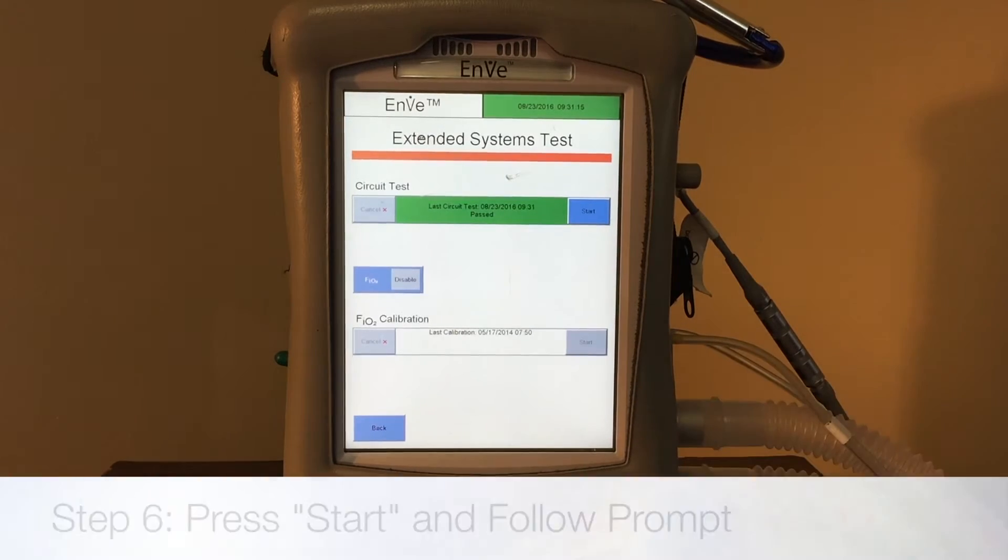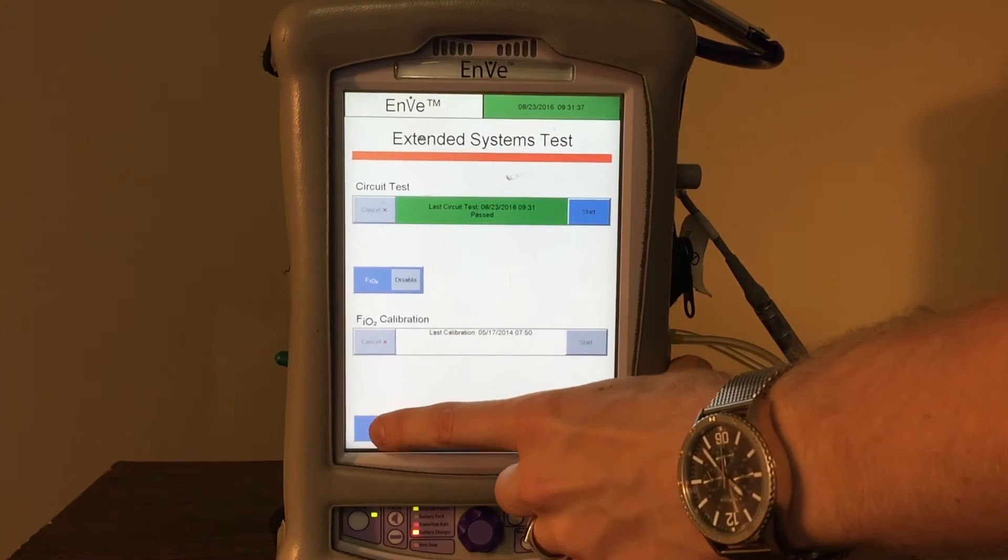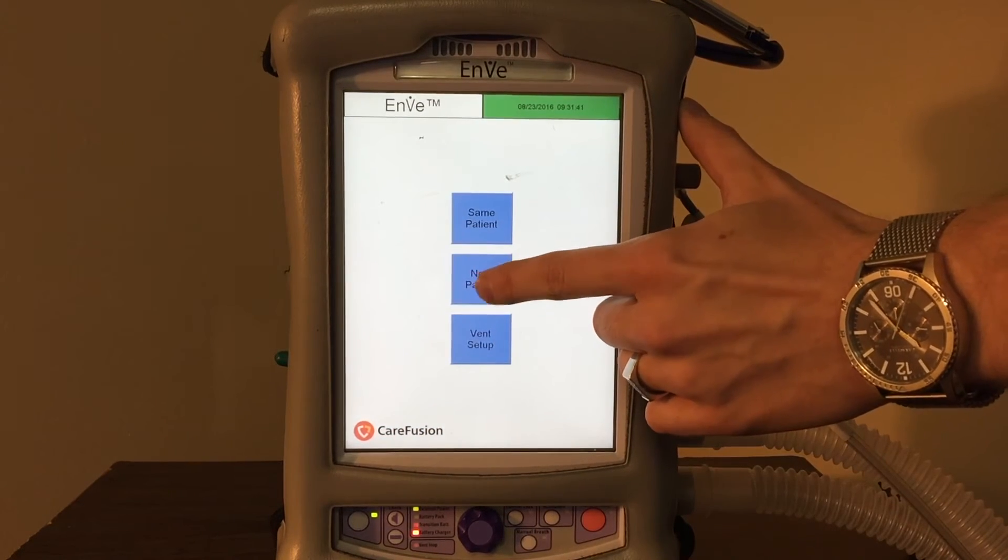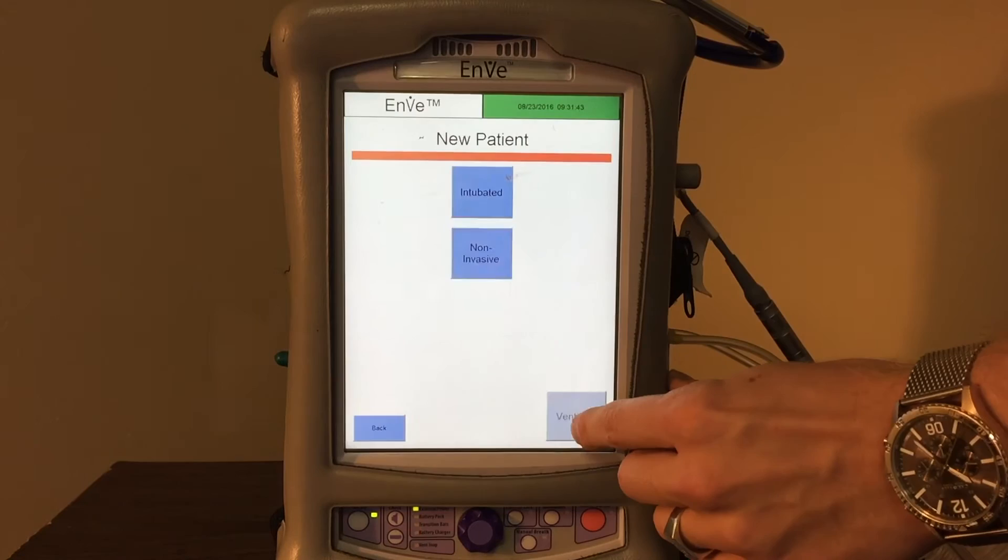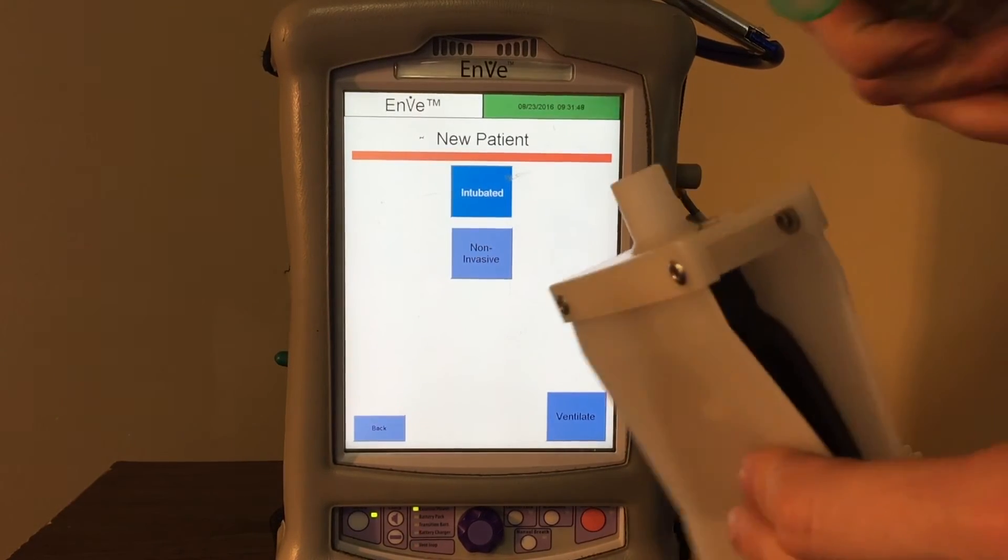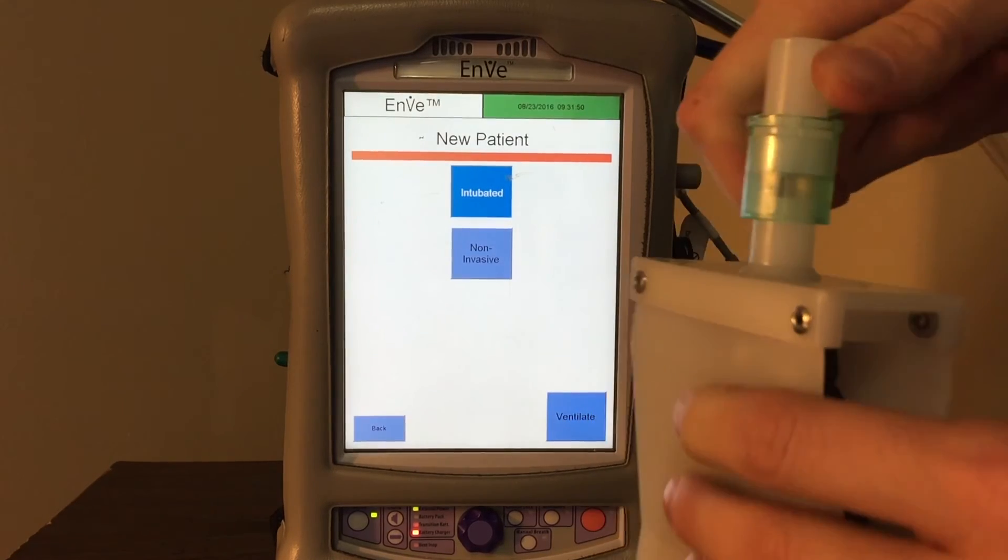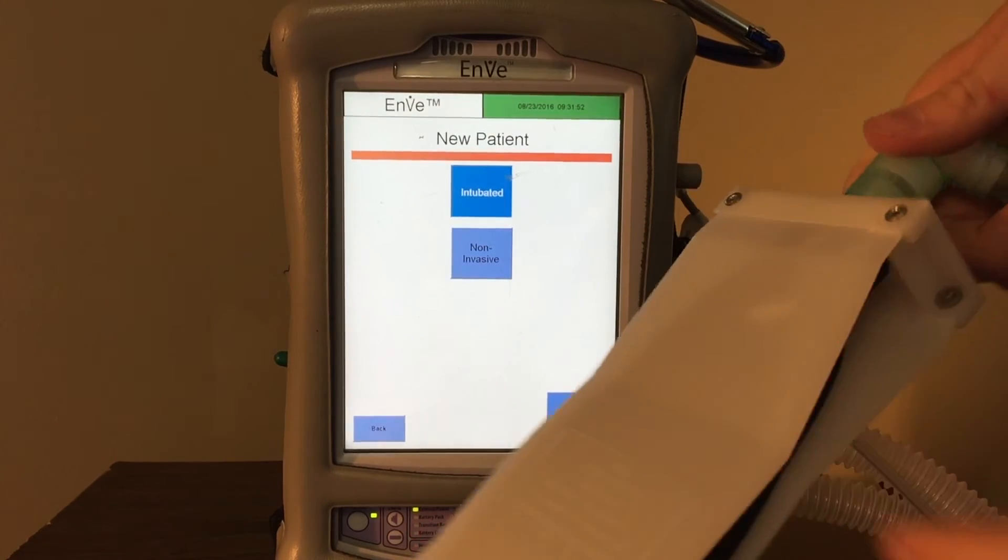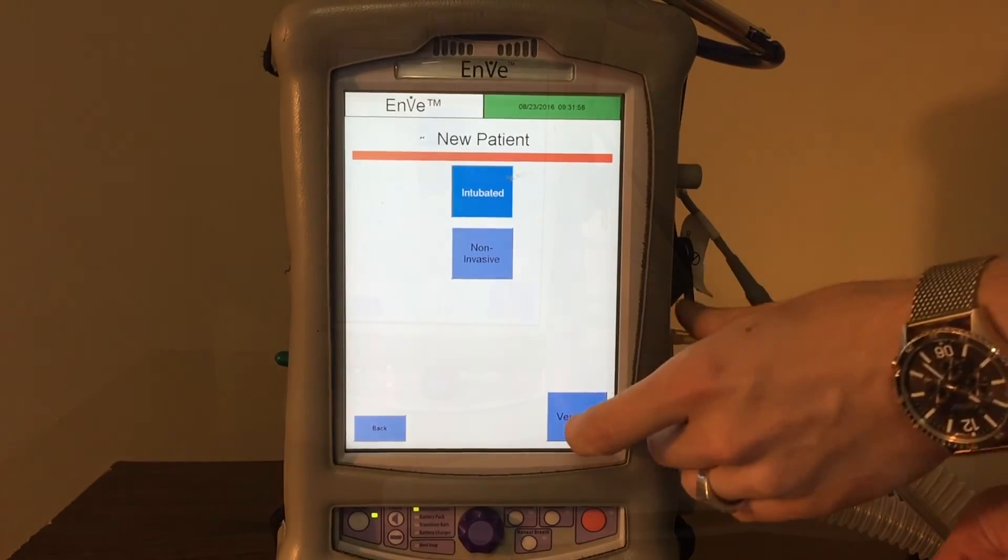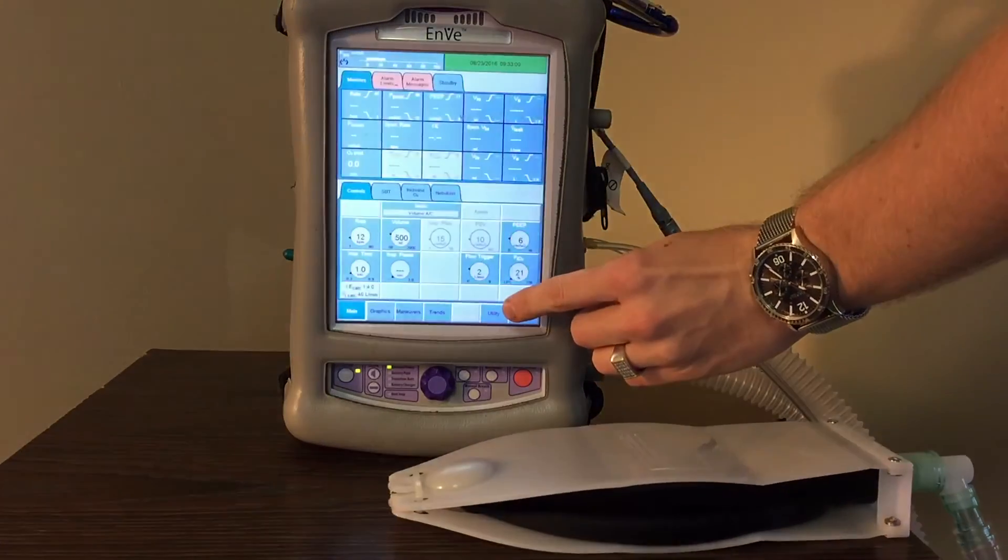So now we're ready to actually hook it up to a test lung. We're going to back out of here. We're going to hit new patient and then we're going to hit next and then intubated. And before we hit ventilate, we'll go ahead and take a test lung here and attach it. And once we hit ventilate, it'll start ventilating that test lung and that'll allow us to put settings in for our patient before we actually attach it to the patient.